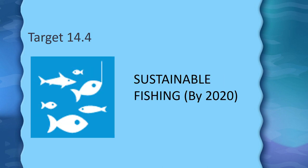Target 14.4: Sustainable fishing, also by 2020 — which means this needed to be done about two years ago, since it is now 2022. We need to effectively regulate harvesting and end overfishing, illegal, unreported, and unregulated fishing, and destructive fishing practices, and implement science-based management plans to restore fish stocks to levels that can produce maximum sustainable yield as determined by their biological characteristics.